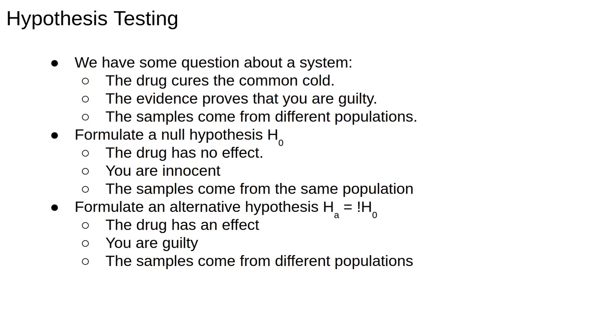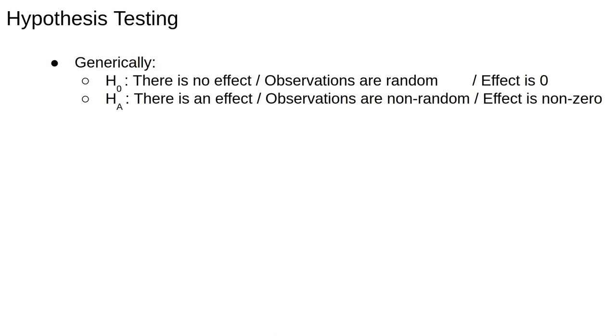Note that we don't say the drug cures the disease. When it comes to hypothesis testing, we have to be very careful about our language. Usually the null hypothesis says something like the observations arise from chance or there is no difference between two treatments, and the alternative hypothesis is then something to the effect of the observations did not arise by chance or there is a difference between two treatments.